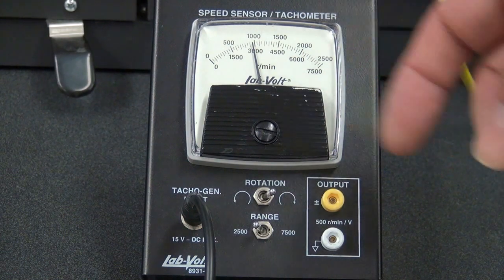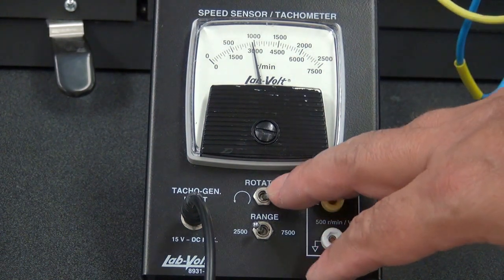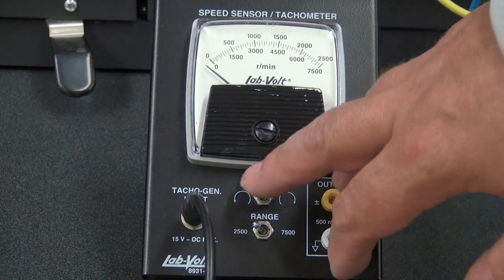If the meter goes in the negative direction, it means that the direction of rotation wasn't selected properly. You can switch it from here.